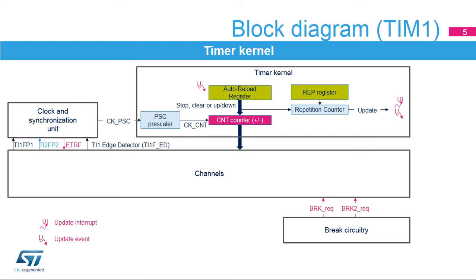The other units of the timer block are: the clock and synchronization unit, which provides the timer clock and triggers; the channels, which handle input capture, output compare, PWM generation, and one-pulse mode output; and the brake circuitry, which puts the timer output signals in a safe user-selectable configuration. These units will be described in the next slides.